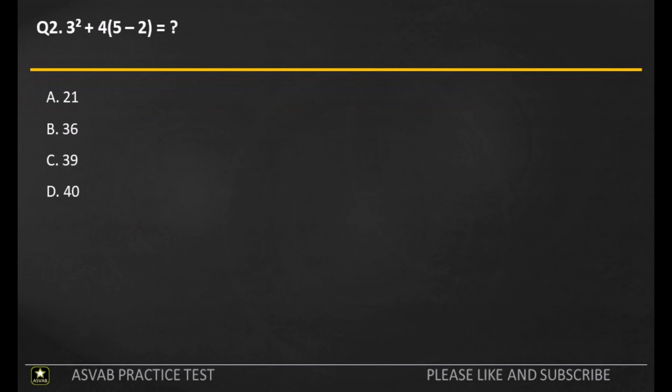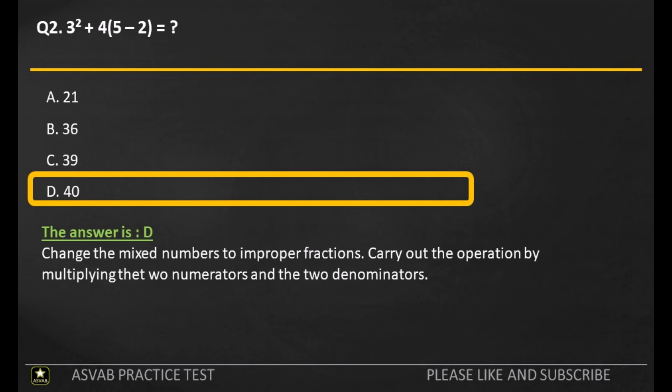Q2. A: 21. B: 36. C: 39. D: 40. The answer is D. Change the mixed numbers to improper fractions. Carry out the operation by multiplying the numerators and the two denominators.